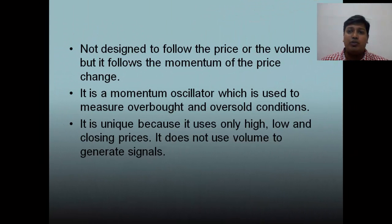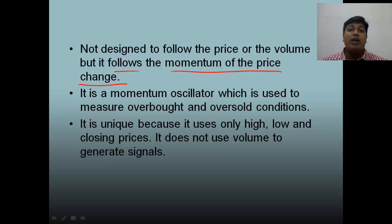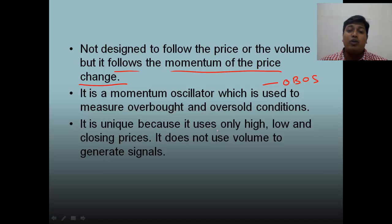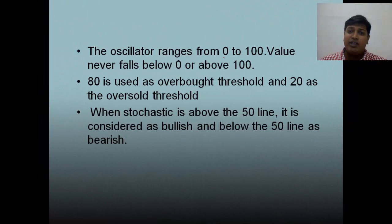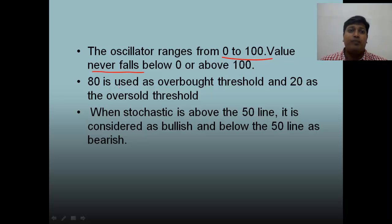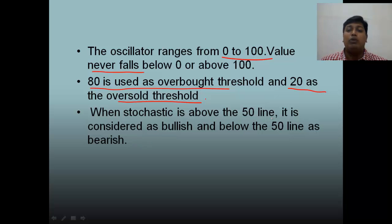Stochastics is not designed to follow the price or the volume — it follows the momentum of the price change. It is a momentum oscillator used to measure overbought and oversold conditions. It is unique because it only uses high, low, and closing prices — it does not use volume to generate signals. The oscillator value always ranges between 0 and 100. When stochastics is above the 50 line it is bullish, and below the 50 line it is bearish.